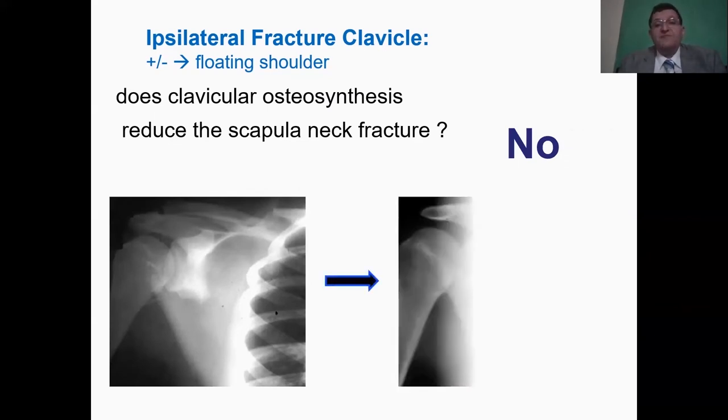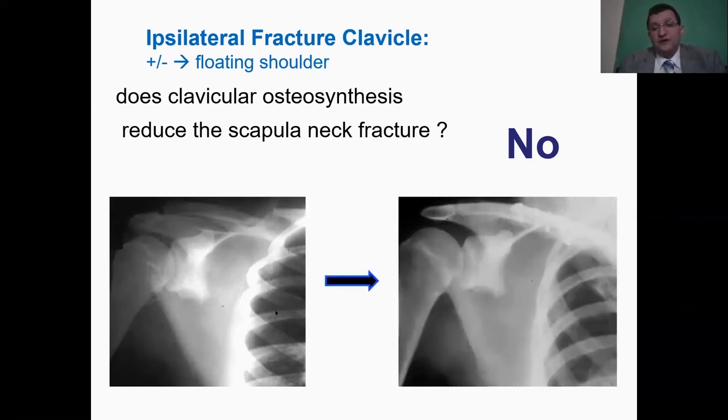And the question that has been asked for many years, does fixing the clavicle in this patient with a displaced neck scapula and a clavicle fracture, does this reduce the scapular neck? Well, it might be, but usually not. If you have the situation, we usually go attack the clavicle first and then flip the patient into a prone or lateral decubitus and then attack the glenoid as well.